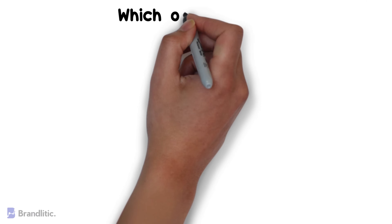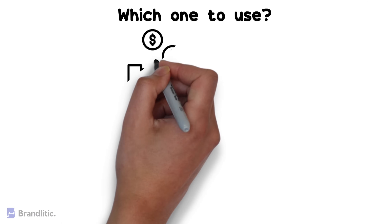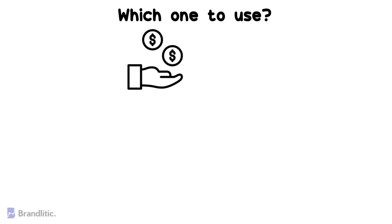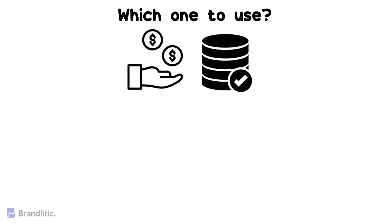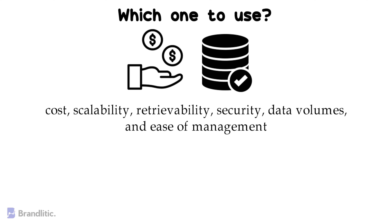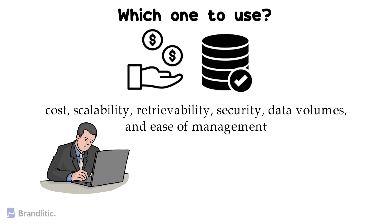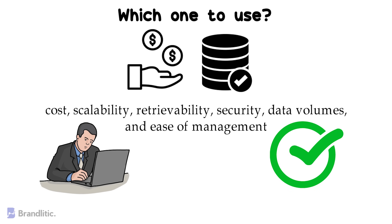If you are wondering which cloud storage type you should use, the type of storage selected affects the cost of the storage and how easily you can access the data in the future. Organizations must account for factors like cost, scalability, retrievability, security, data volumes, and ease of management when choosing any of the cloud storage types for their use case. As new data types and use cases arise, organizations must constantly evaluate and optimize their storage types for each subset of data, and storage strategies and decisions should continually evolve as business needs and technology changes.